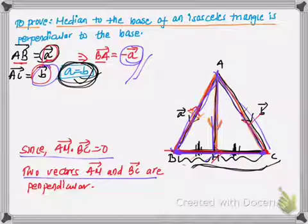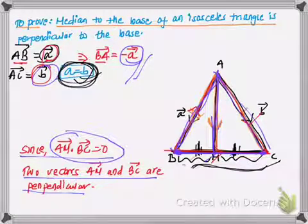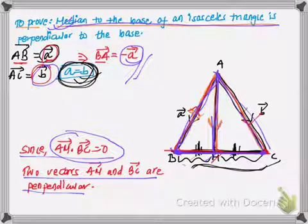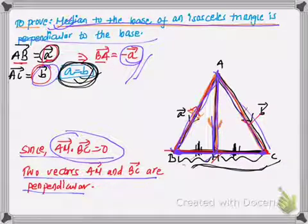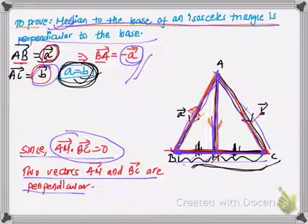Since AM dot BC equals zero, the two vectors AM and BC are perpendicular. We have therefore proved that the median to the base of an isosceles triangle AM is perpendicular to the base BC. I hope it is clear to you, thanks for watching.